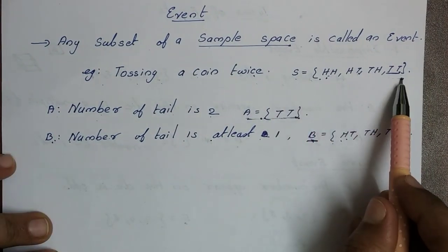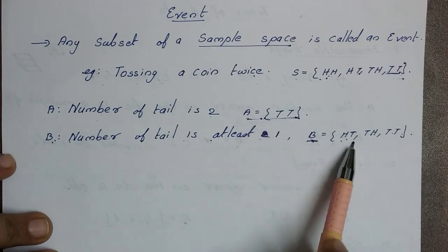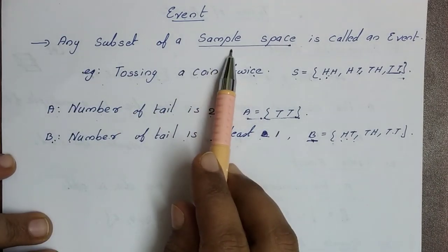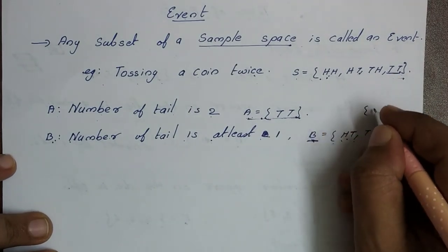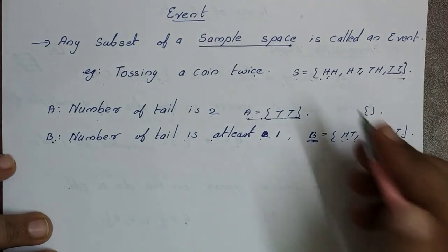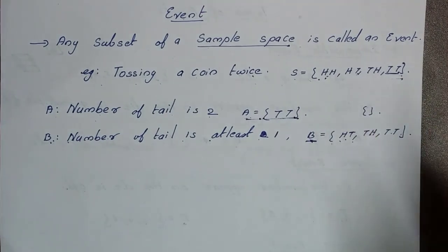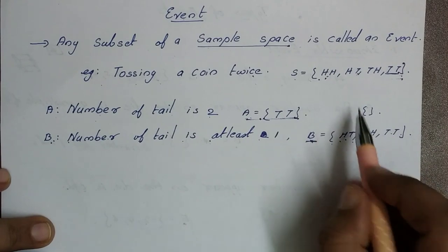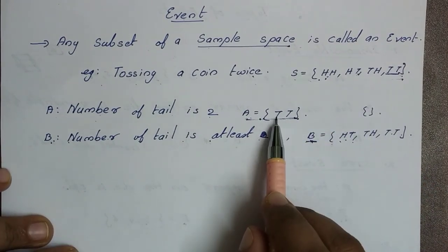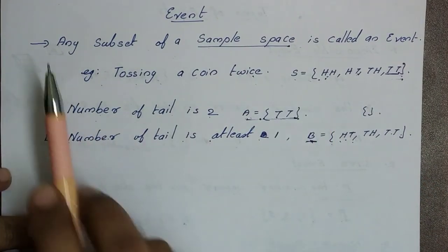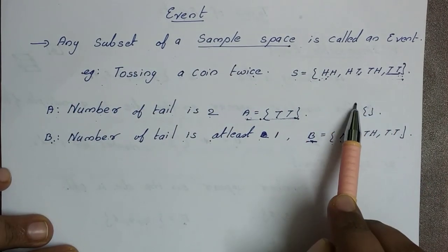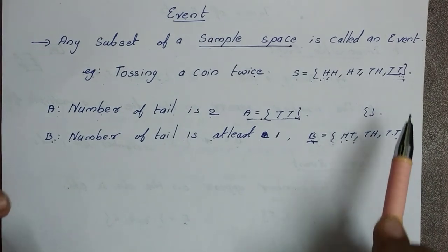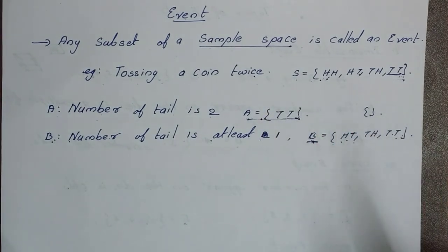So what is the sample space? Any subset of the sample space is an event — this is a subset, this is a subset. Now we have a null set. Null set is also a subset. That is the same concept we have in sets. So any subset of the sample space, including the null set, is called an event.